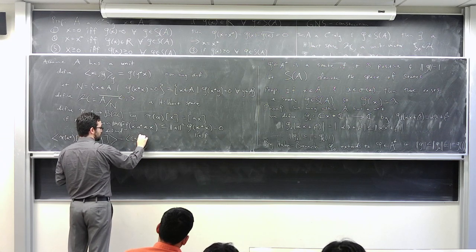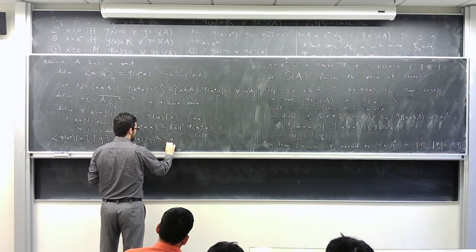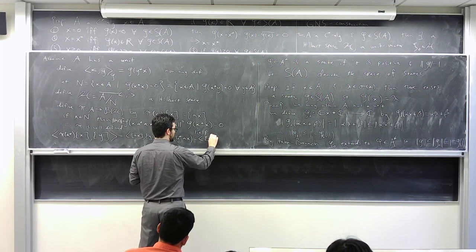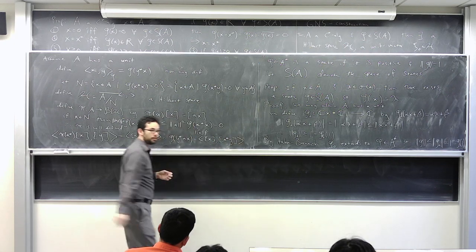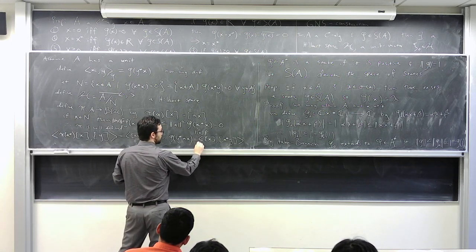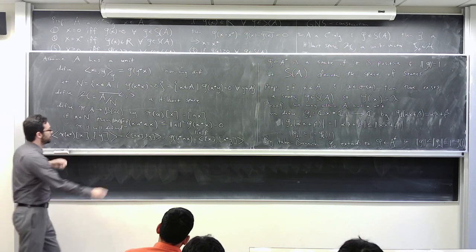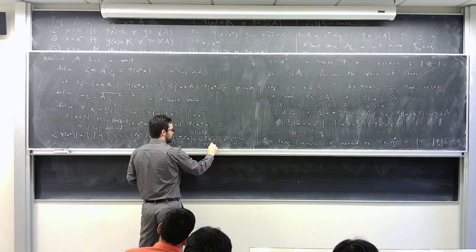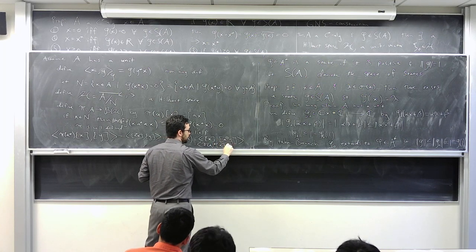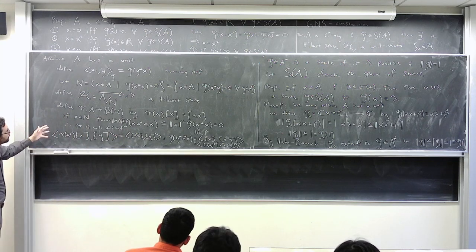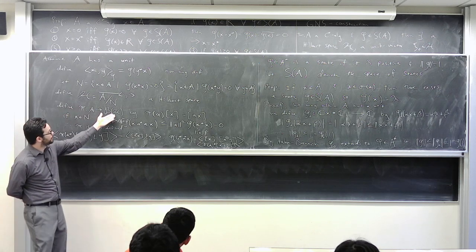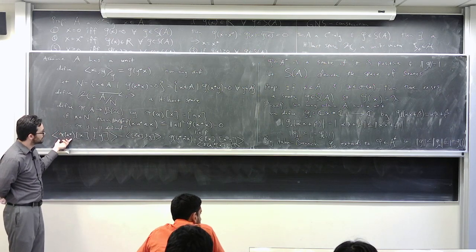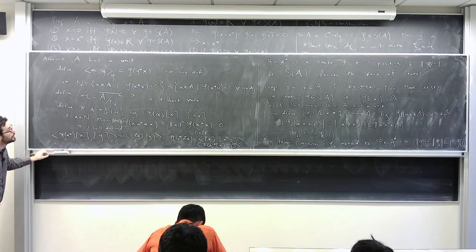To check it's a star-homomorphism: compute ⟨π(a*)[x], [y]⟩ = ⟨[a*x], [y]⟩ = φ(y*a*x) = ⟨[x], [ay]⟩ = ⟨[x], π(a)[y]⟩. So π(a*) = π(a)*. Note this is only defined on the dense subspace A/N, but since it's bounded, it extends to all of H. So π is a star-representation.